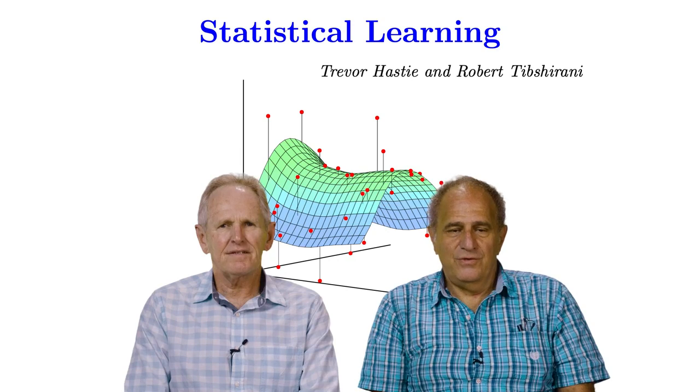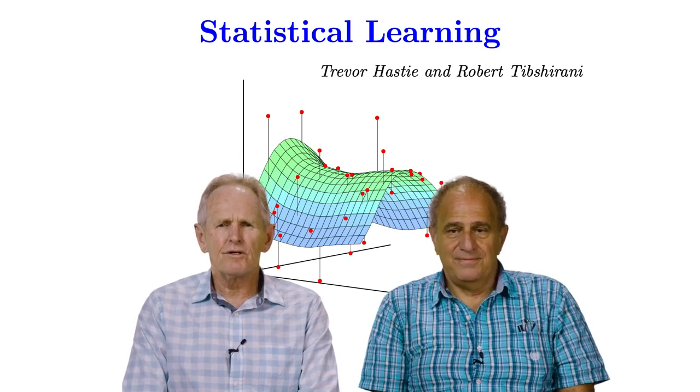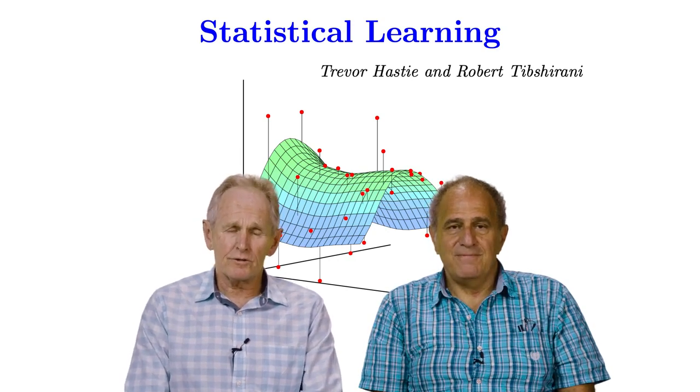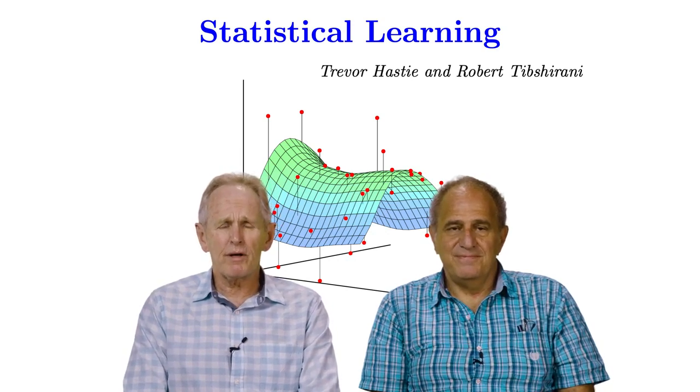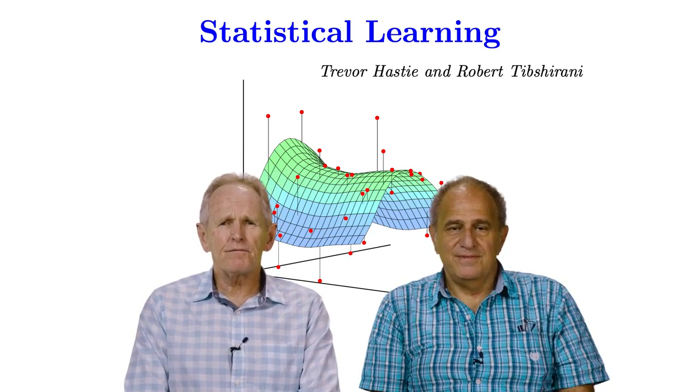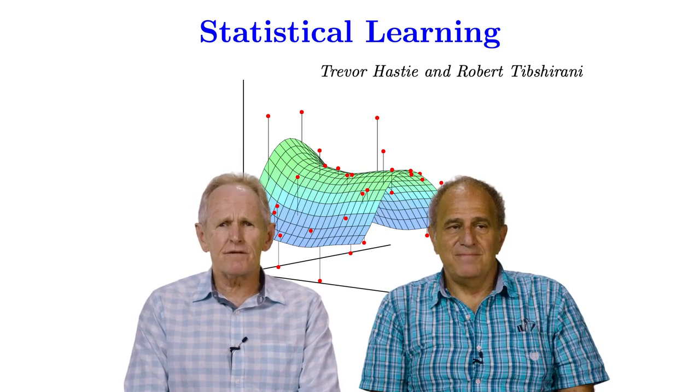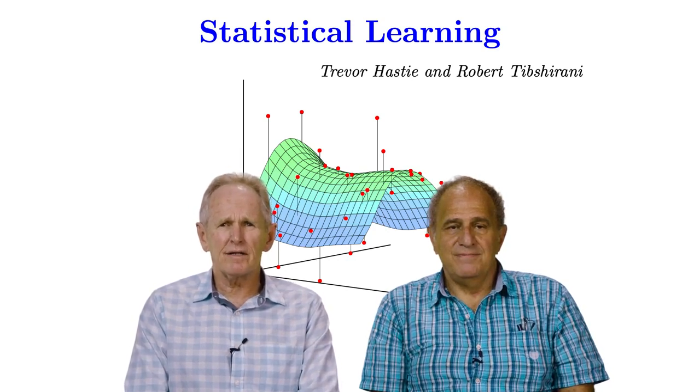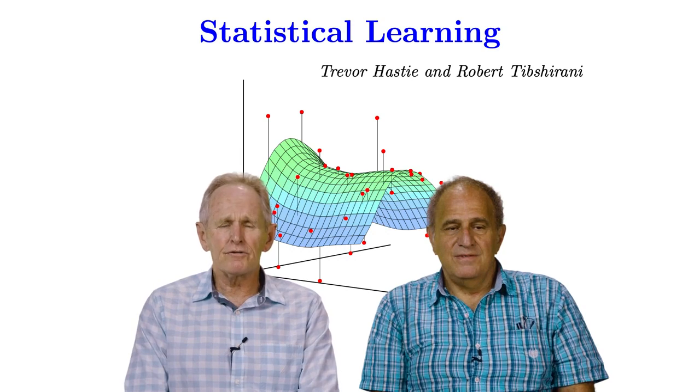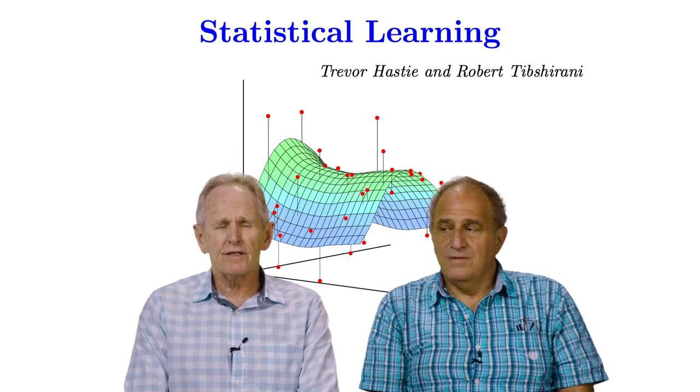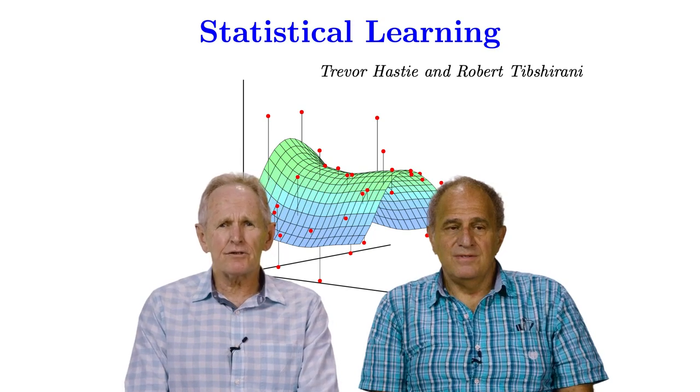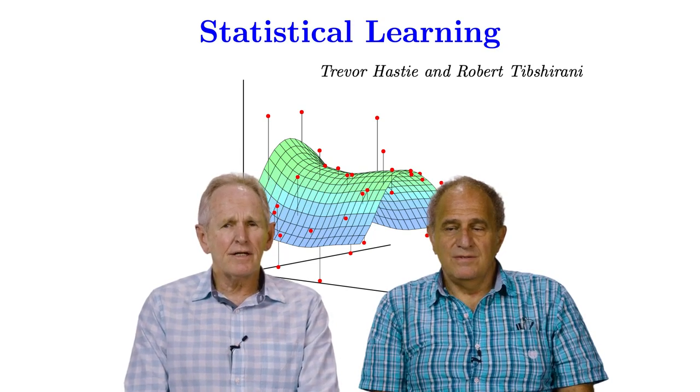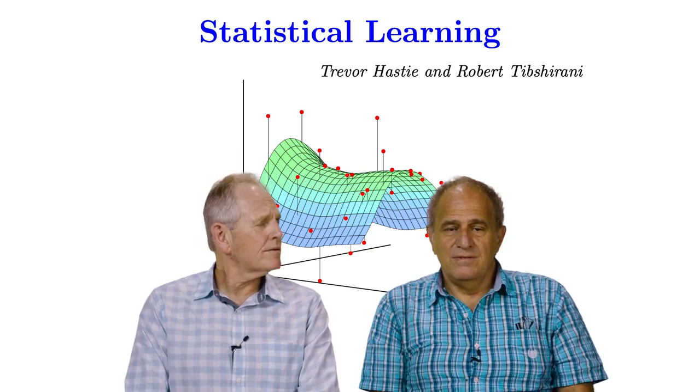In addition, you'll notice if you look in the book, which is also freely available on our websites and on the book website, there are a few little extra pieces in various chapters. So in chapter four, we have a new section on generalized linear models. In the unsupervised learning chapter, we have a section on matrix completion.